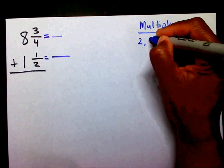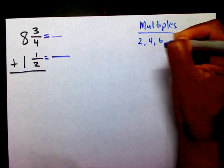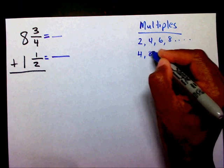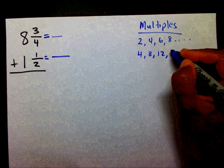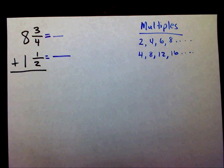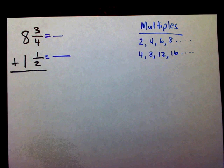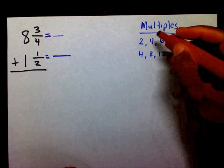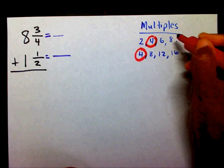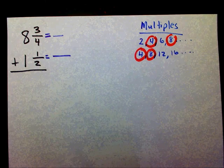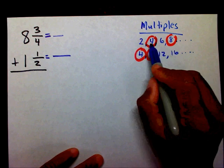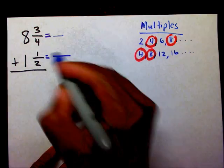My multiples of 2 and 4. My multiples of 2 are 2, 4, 6, 8 and so forth. My multiples of 4 are 4, 8, 12, 16 and so forth. So what multiples do they have in common? Well, they share a 4. They also share 8. But we want the least common multiple, the smallest common multiple. So the smallest common multiple that they share is going to be 4. And that's going to be my new denominator.